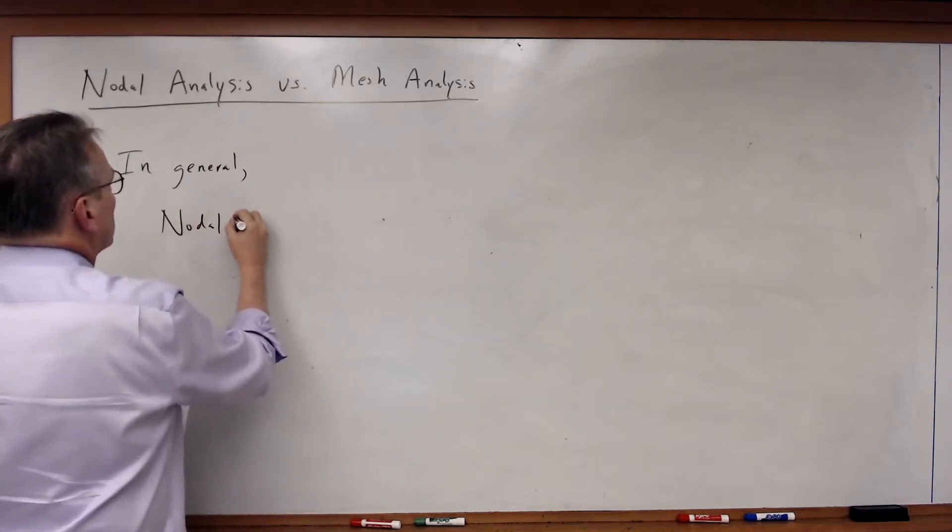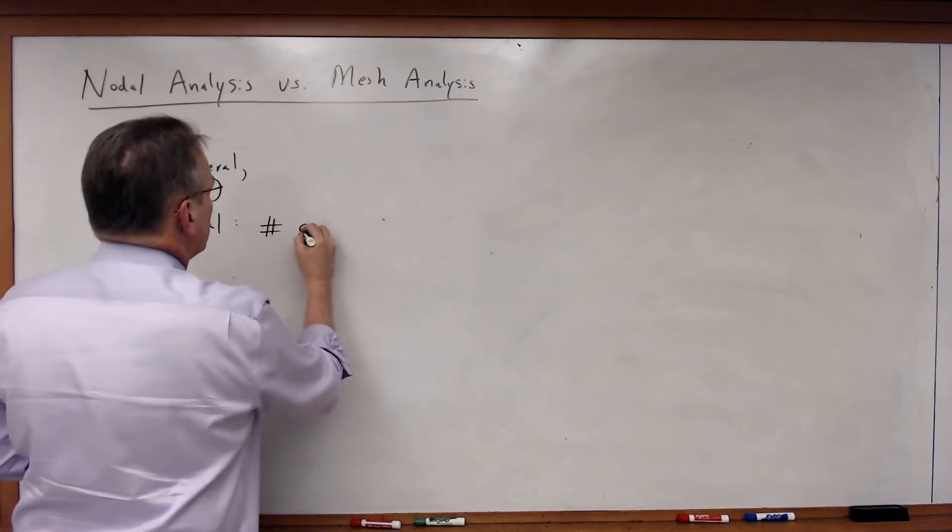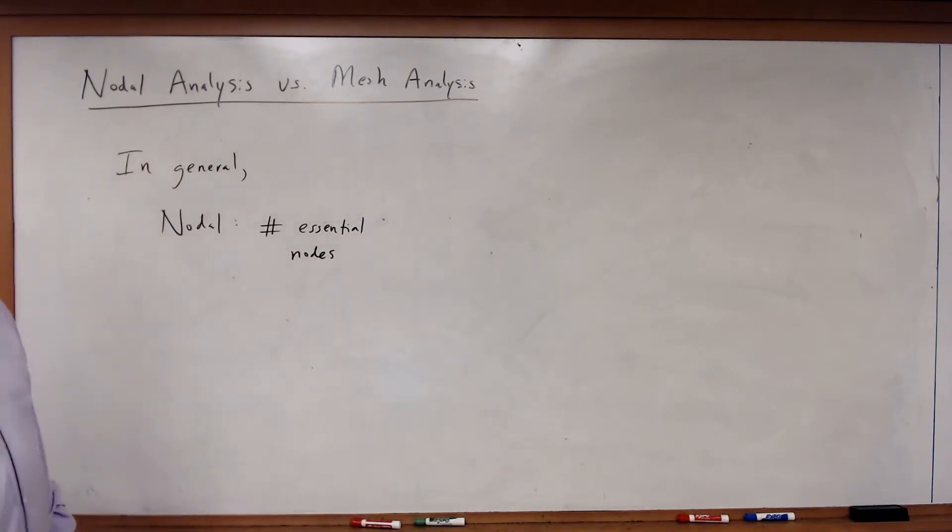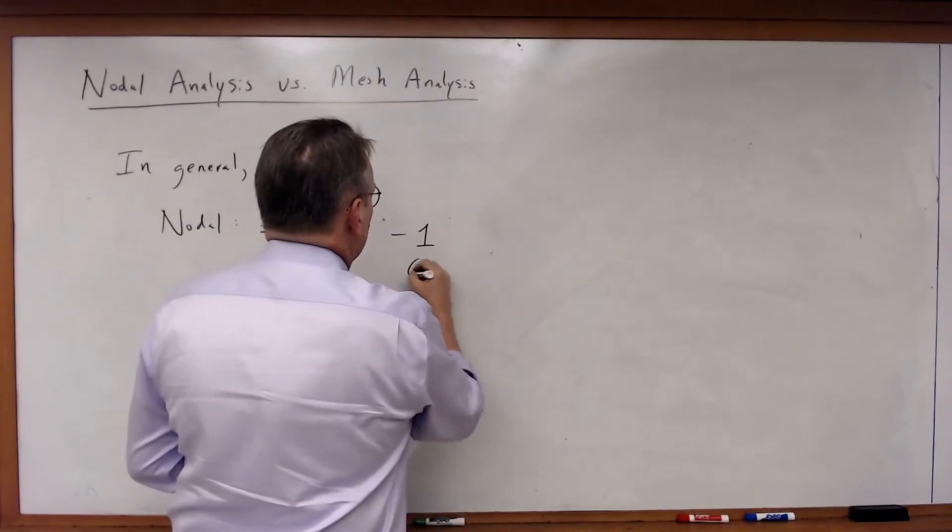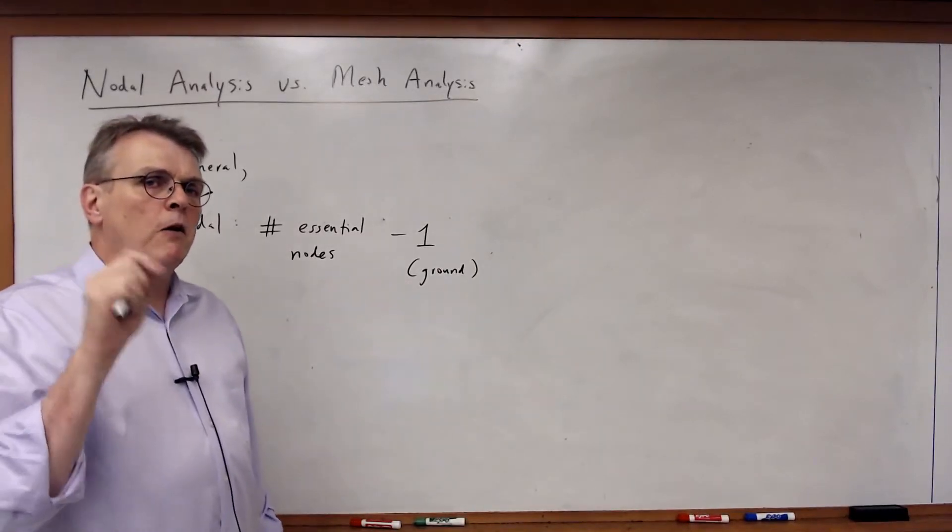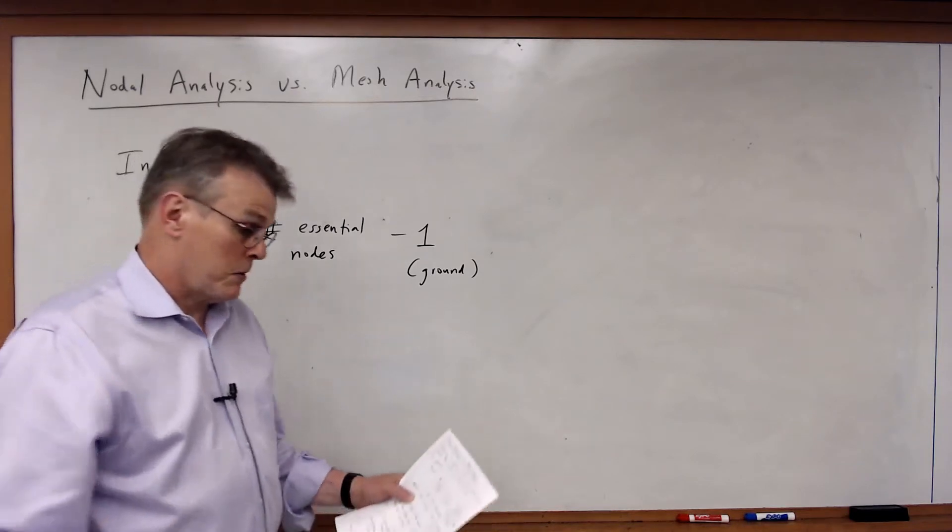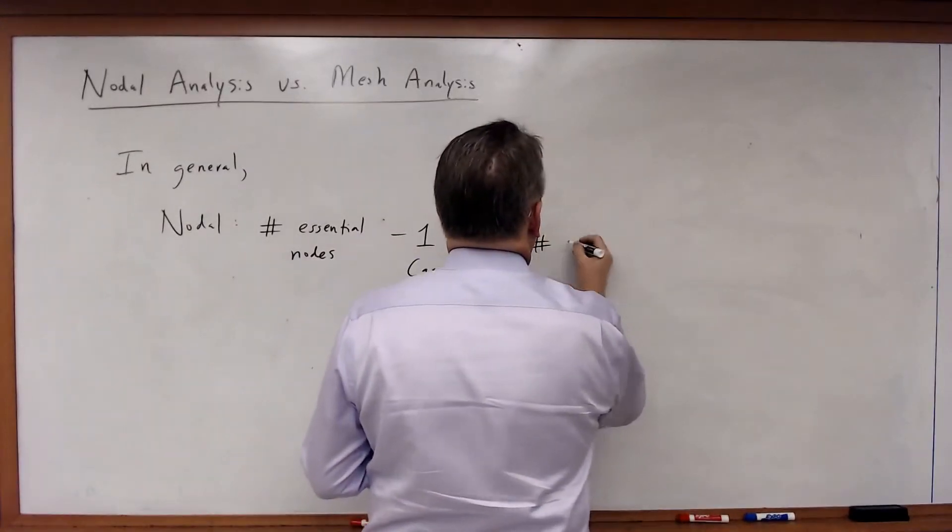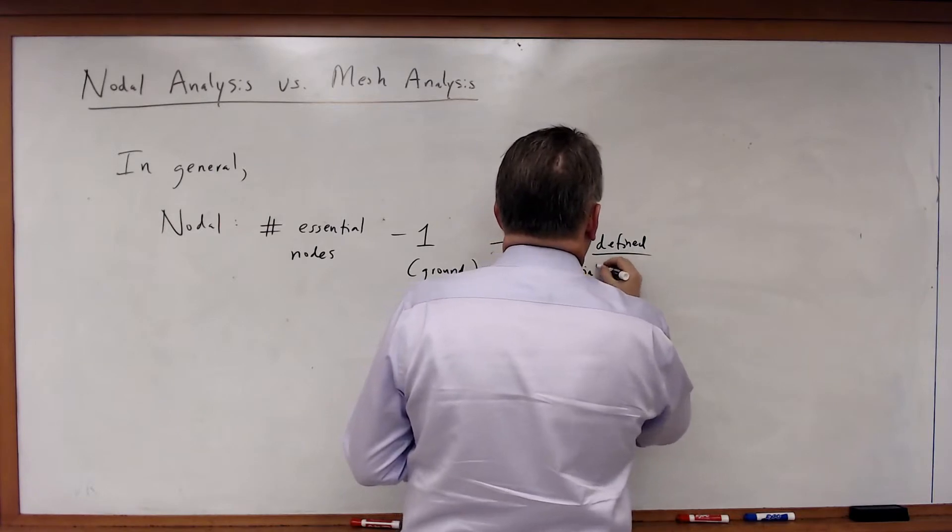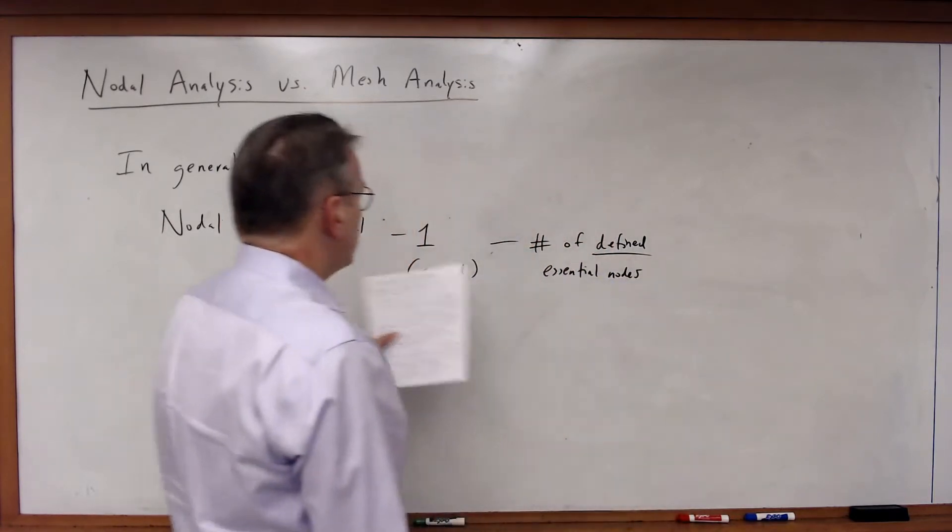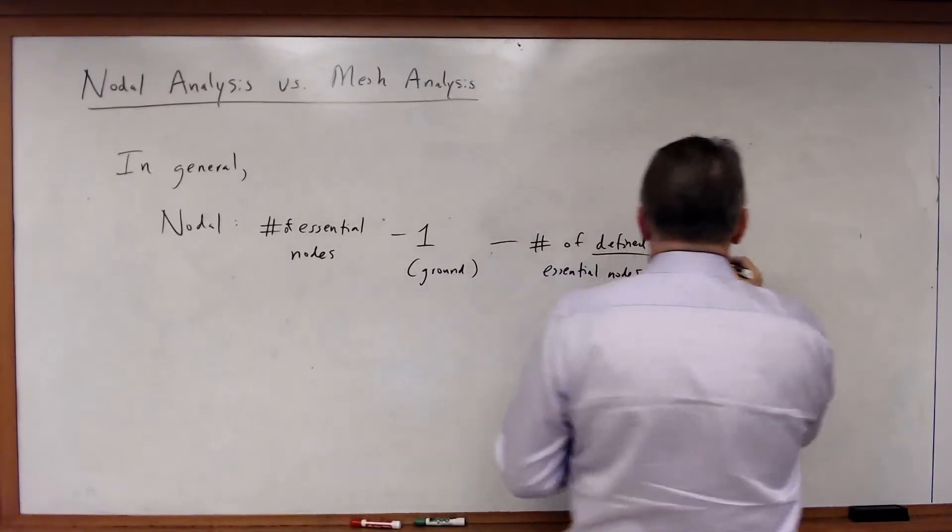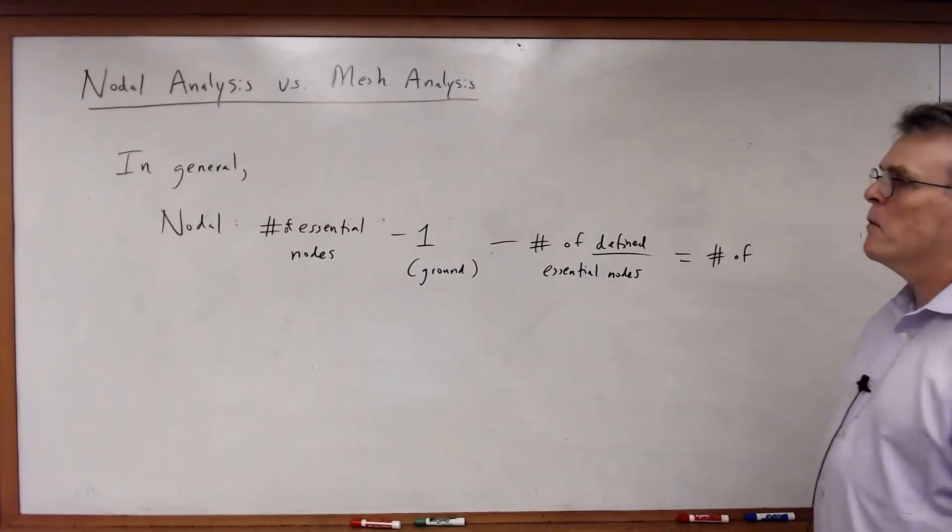For nodal analysis, take the number of essential nodes. Count the number of essential nodes in the circuit, subtract one of them as ground, and then look and see if you can also subtract any essential nodes because they're defined by a voltage source. Take that, make that estimate, and that will give you the number of KCL equations.